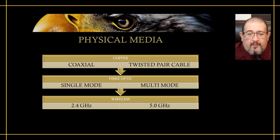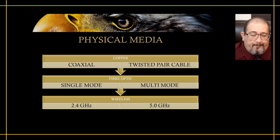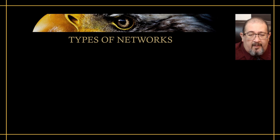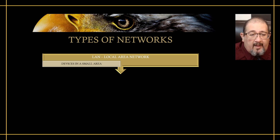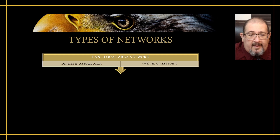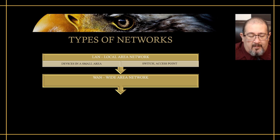Within each of those physical media there are distance limitations, and based on how far my end devices or network devices are, I would select either copper, fiber optic, or wireless. Once we understand the network devices and how we connect them together, we can categorize these networks based on geographical location. The first common one is the local area network, or LAN. In a local area network, devices are in a small area, typically connected with switches or access points. When I want to connect one LAN to another LAN that's far away, this is where I have a wide area network — a WAN connects multiple LANs over a large area.